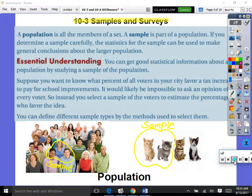So it says if you determine a sample carefully, the statistics for a sample can be used to make general conclusions about a larger population. So basically, a population can be many things. For example, this group of people here, we'll call this a population. Now taking a sample would be picking a smaller piece of that entire population. For example, a population of kittens, this would be an example of a sample. Everybody understand?